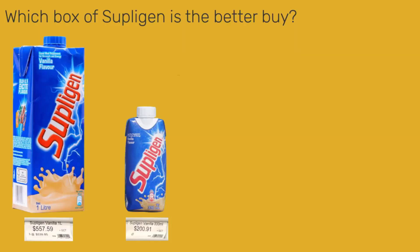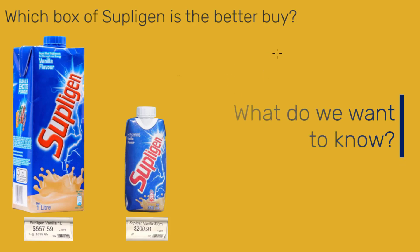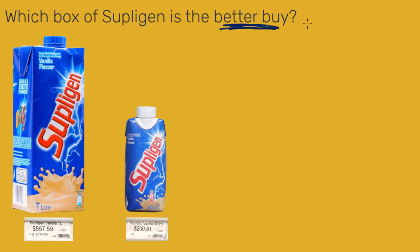First I need to understand or identify clearly what I want to know. I want to know which one is the better buy. What does that mean? It means the one that is more value for money — in other words, I'll get more of the supplicant for less money. That's the better buy.